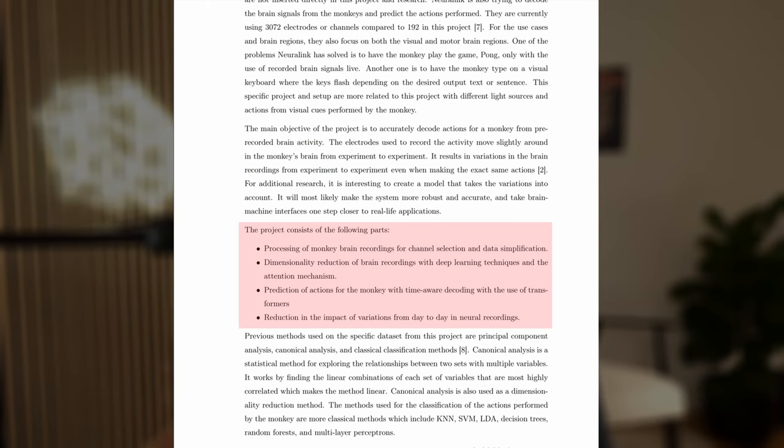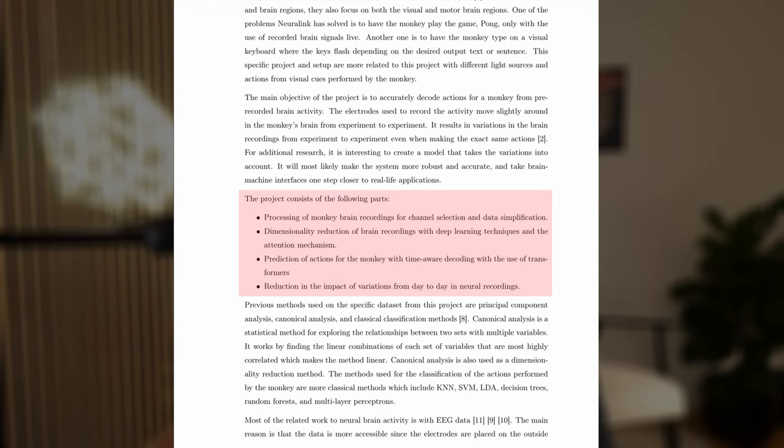The main parts of this project are: processing of the monkey brain recordings for channel selection and data simplification; dimensionality reduction of brain recordings with deep learning techniques and attention mechanism; predictions of actions for the monkey with time aware decoding using transformers; and then reduction in impact of variations from day to day in neural recordings. That last point is actually very important because one of the main problems with neural activity recording devices is that the brain changes a lot over time. One day the brain is in one configuration, the next day the neurons are actually moving around. The more time between each session, the more variation you will have in your dataset. My dataset here has trials spanning a year.